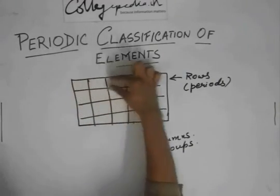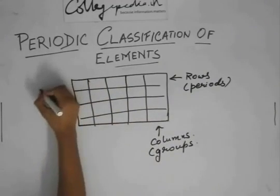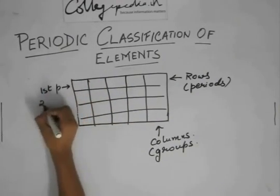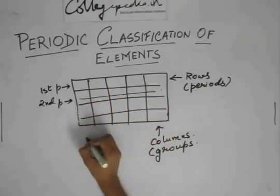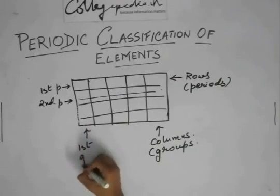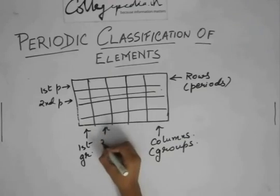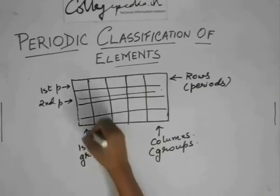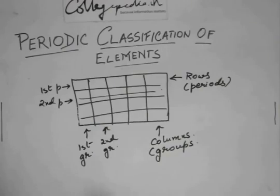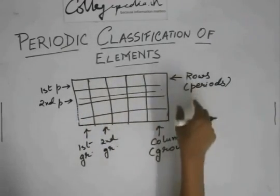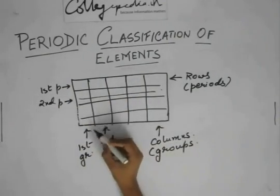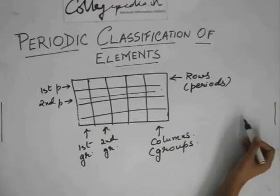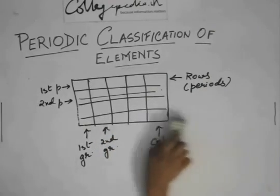So, basically, this is one period, this is the first period, this is the second period, this whole thing. And this is the first group, this is the second group, and so on. So, you had seven groups in Newland's law of octaves. You remember? There were repetition after seven elements, so there were seven groups.